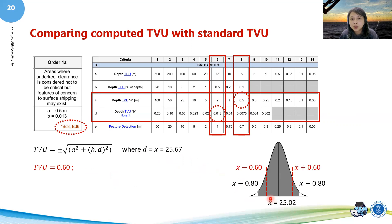0.60 is actually smaller than 0.80, so it means that your crossing does not comply to order 1a standard TVU. Either you need to check another crossing points or you reject that. This is what we're going to do today.